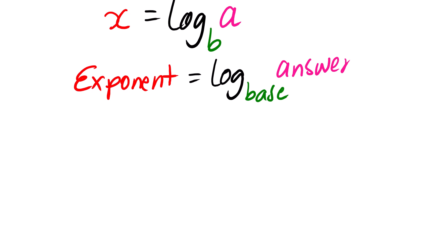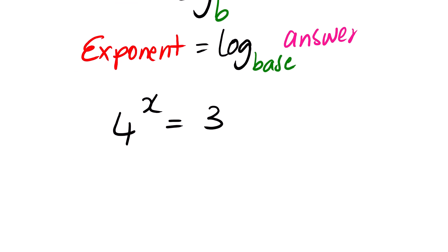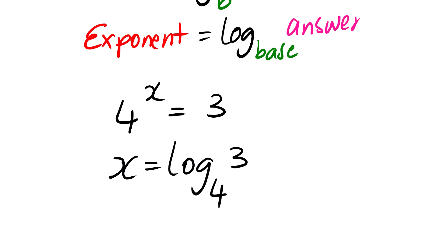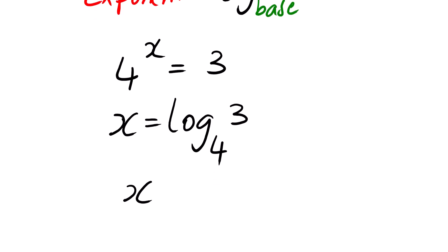Now looking at an example — suppose we have 4 to the power x equals 3, and we are trying to write this in logarithmic form. It will be x, which is our exponent, equals log. What is our base? Our base is 4, and then the answer is 3. This gives us x equals log base 4 of 3, which is 0.792.